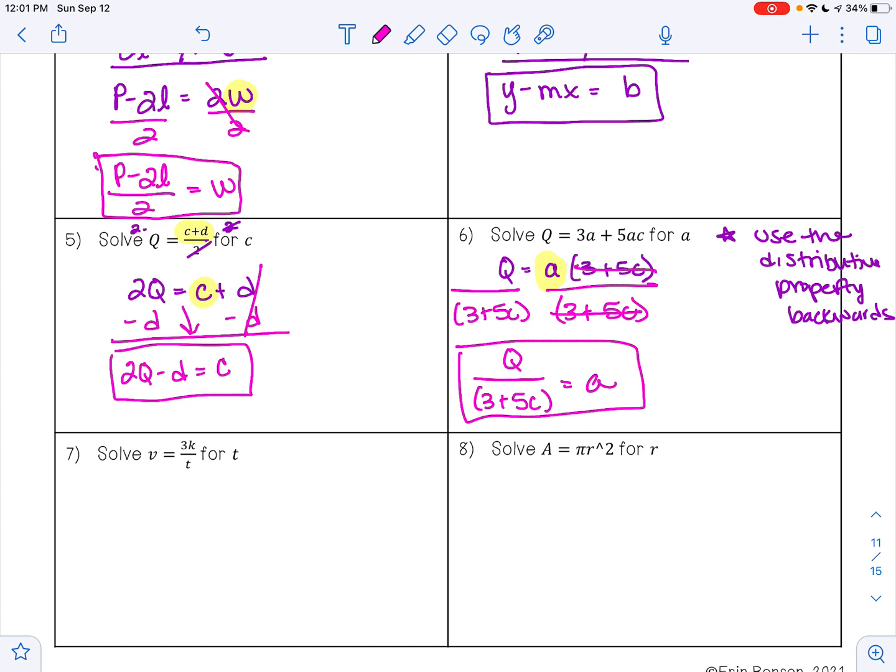On example 7, I want to solve V equals 3K divided by T for T. T is in the denominator. You cannot solve for a variable that is in the denominator. So your very first step is going to be to get T out of the denominator by multiplying both sides of your equation by T. So I'll have TV is equal to 3K. I still want to get T alone. T is being multiplied by V. To undo multiplication, I'll do division, and I'll have T equals 3K divided by V.